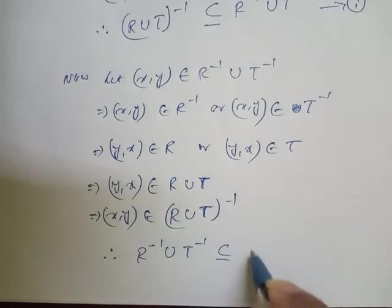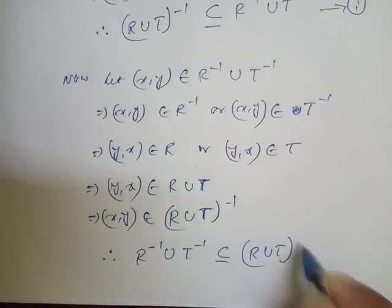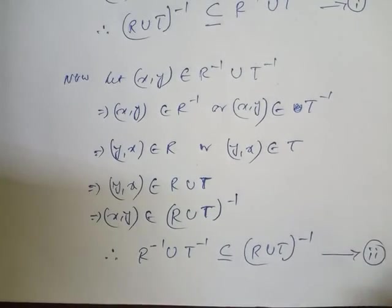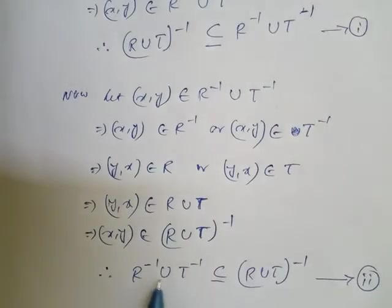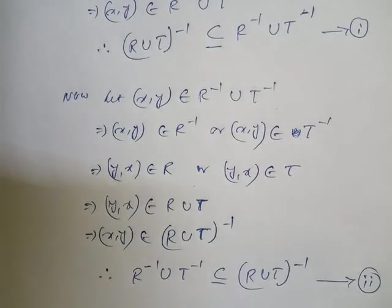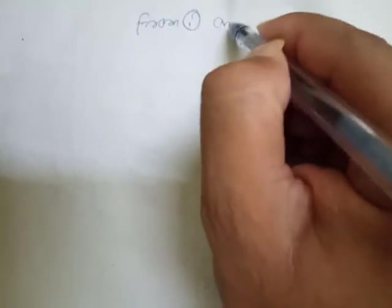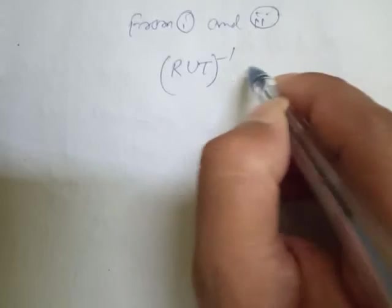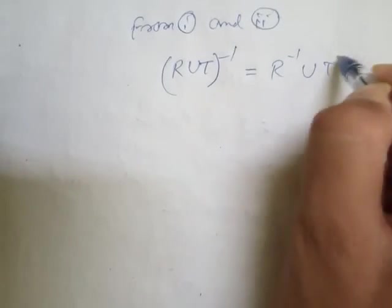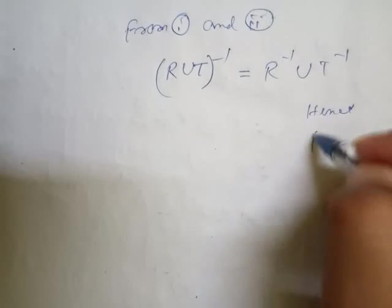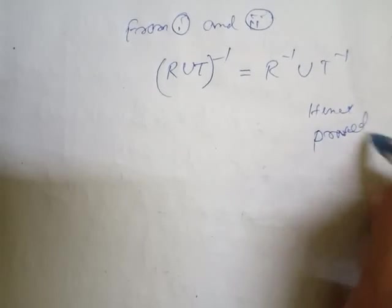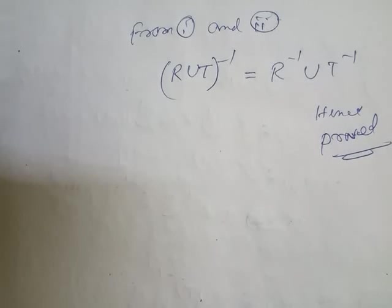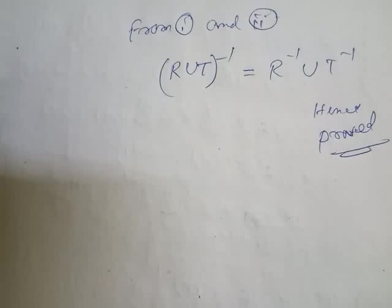Therefore R inverse union T inverse is a subset of R union T whole inverse — this is equation number two. From equation one and two both are the same, so we can say that R union T whole inverse equals R inverse union T inverse. Hence proved. This question number 13 from exercise 1.3 is very important.